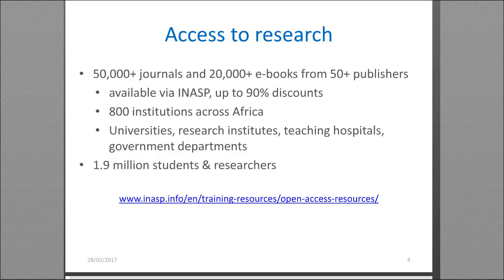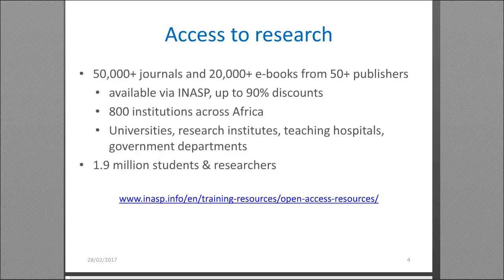We currently have worked with over 800 institutions across Africa through these national-level consortia, involving universities, research institutes, teaching hospitals, and government departments. We estimate that we've impacted around 1.9 million students and researchers. The link on screen will take you to our open access resource page, which gives a comprehensive list of freely available resources.